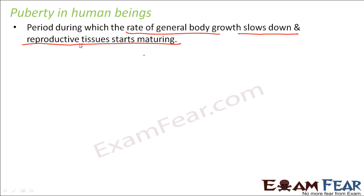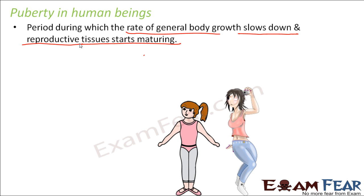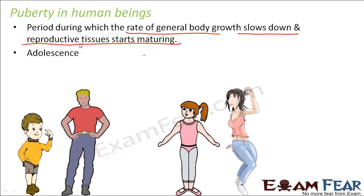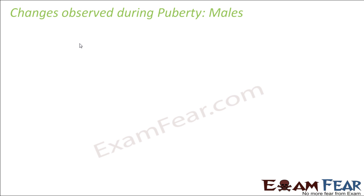Puberty happens in different people in different ways, but there are some changes commonly seen in all persons — whether male or female — that indicate they have entered puberty. You can very easily distinguish between a 10-year-old girl and a 15-year-old girl just by looking at their physical appearance. Puberty is also known as adolescence — it is the intermediate phase of life between childhood and adulthood.